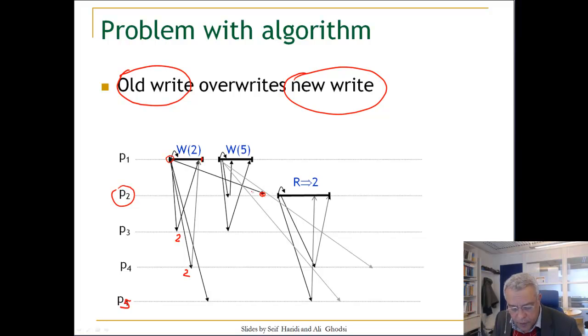Now P1 performs another write operation. It will get an acknowledgment from itself, from P2—P2 has value 5 here—and from P3. But now, according to the algorithm, when the first broadcast message from P1 arrives at P2, it will overwrite the value written before. At this point, P2 will have value 2. When P2 starts a read, it will get an acknowledgment from P5—P5 at this point has value 2—from P4—P4 has value 2—and from itself. It will read the value 2, which is wrong. It should have read the value 5.